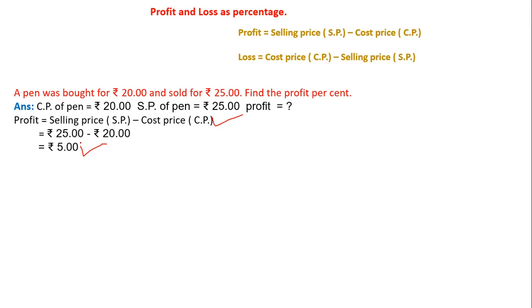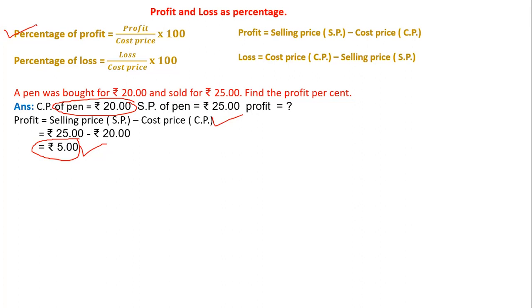Now we calculated the profit, given the cost price of a pen. Easily we can find the profit percentage using the formula. I am writing: percentage of profit is equals to profit divided by cost price into 100.